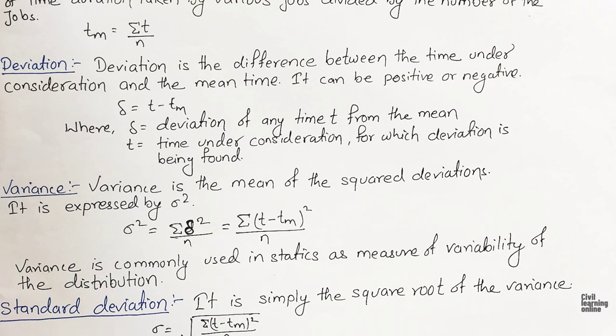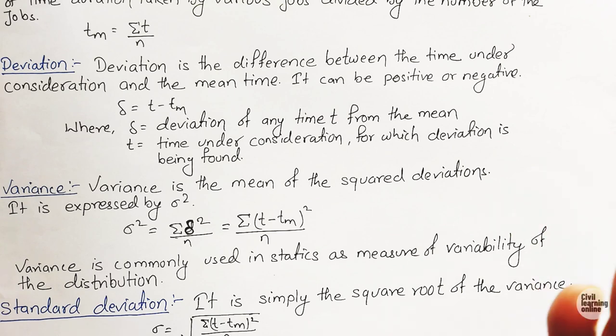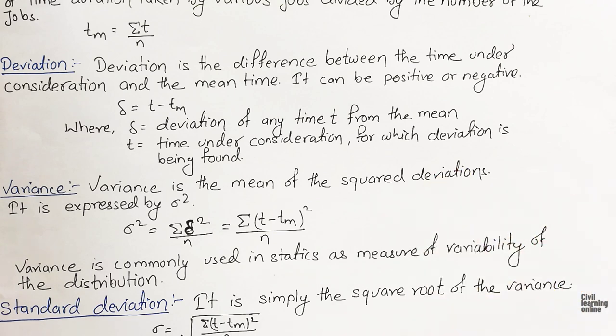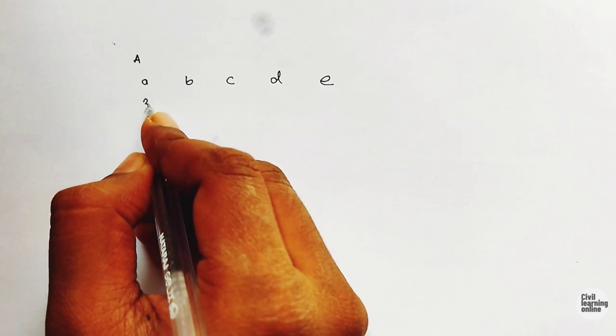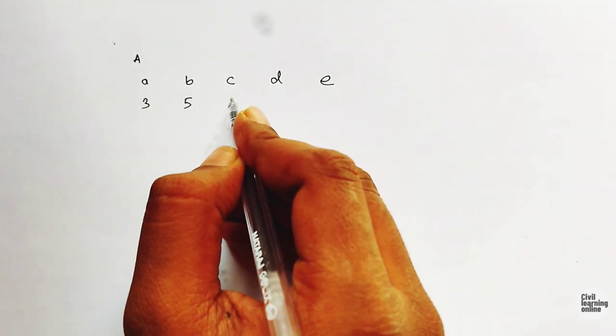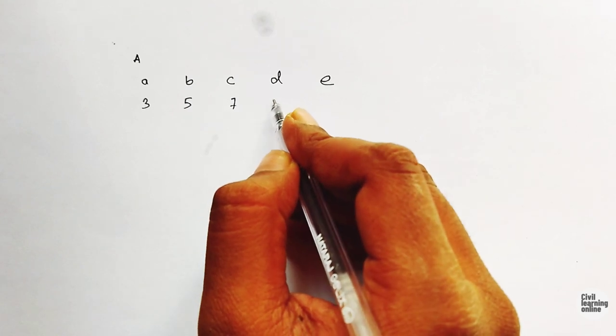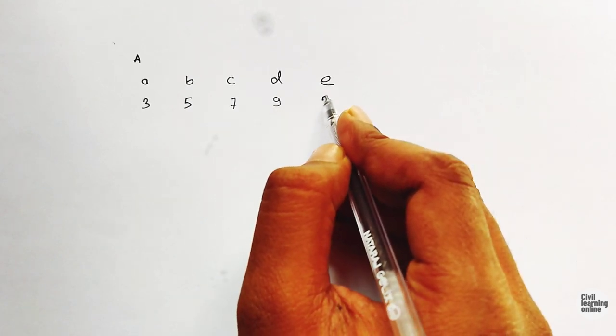Let's solve an example calculating mean, deviation, variance, and standard deviation. Consider a project A with activities A, B, C, D, and E with time durations of 3 days, 5 days, 7 days, 9 days, and 3 days respectively. Mean equals the sum of all durations divided by the number of activities, so mean = (3 + 5 + 7 + 9 + 3) divided by 5, giving us a mean of 5.4.